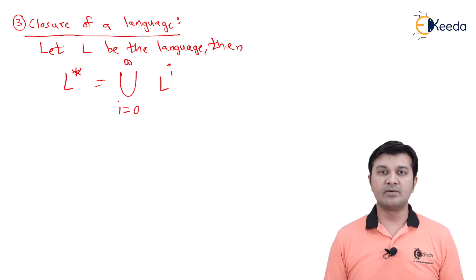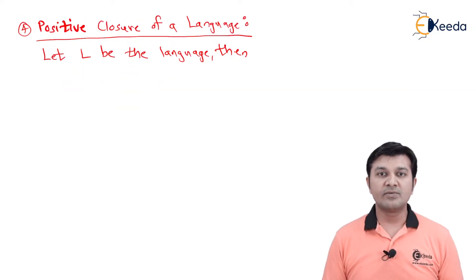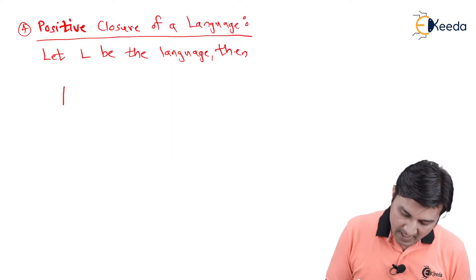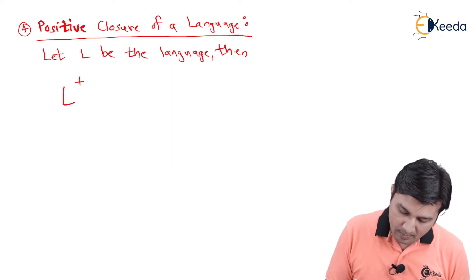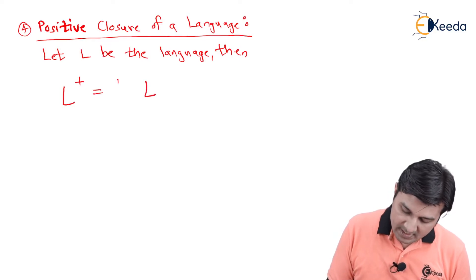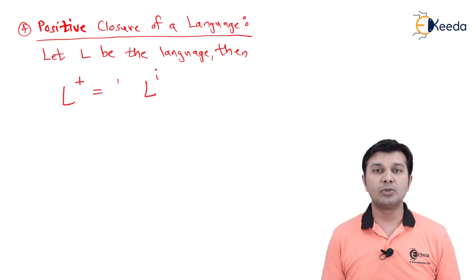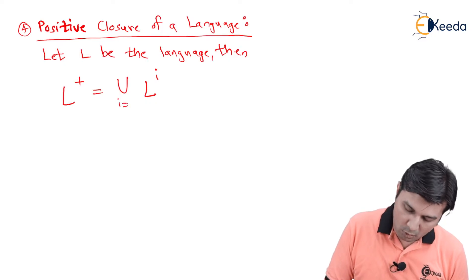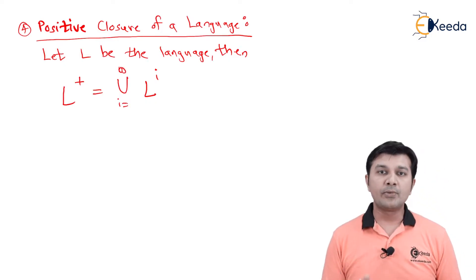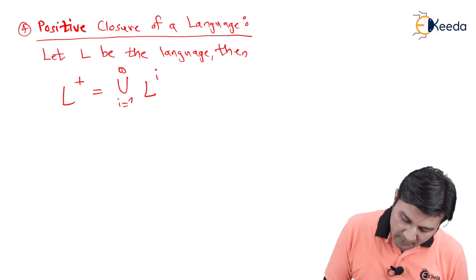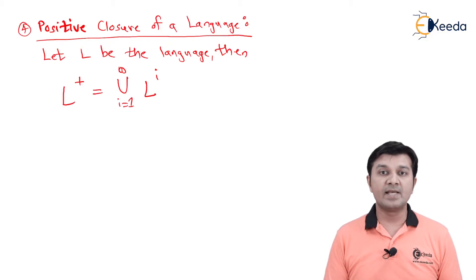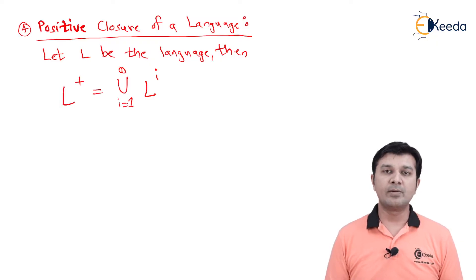Following the closure, the next definition is the positive closure of a language. Let L be the language; then the positive closure, denoted by L plus, is again the set of all L^i — quite similar to the previous one — but here i runs from 1 to infinity. Previously i started from 0; the only difference here is that i starts from 1. So positive closure is the set of all L^i running from 1 to infinity, denoted by L plus.